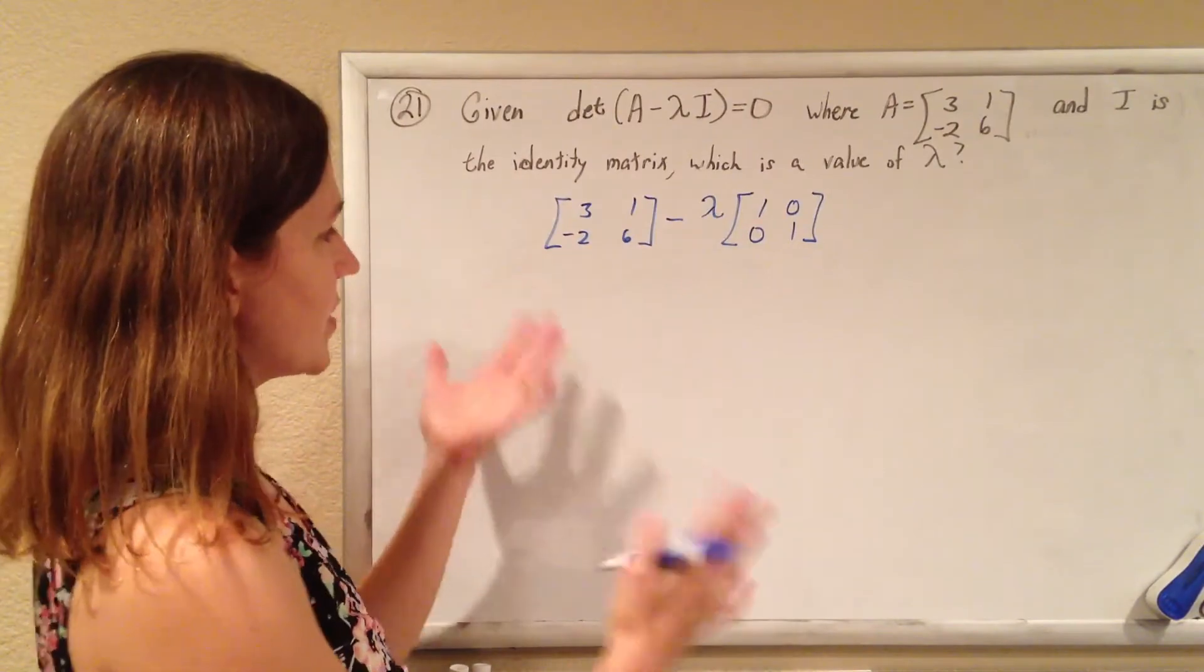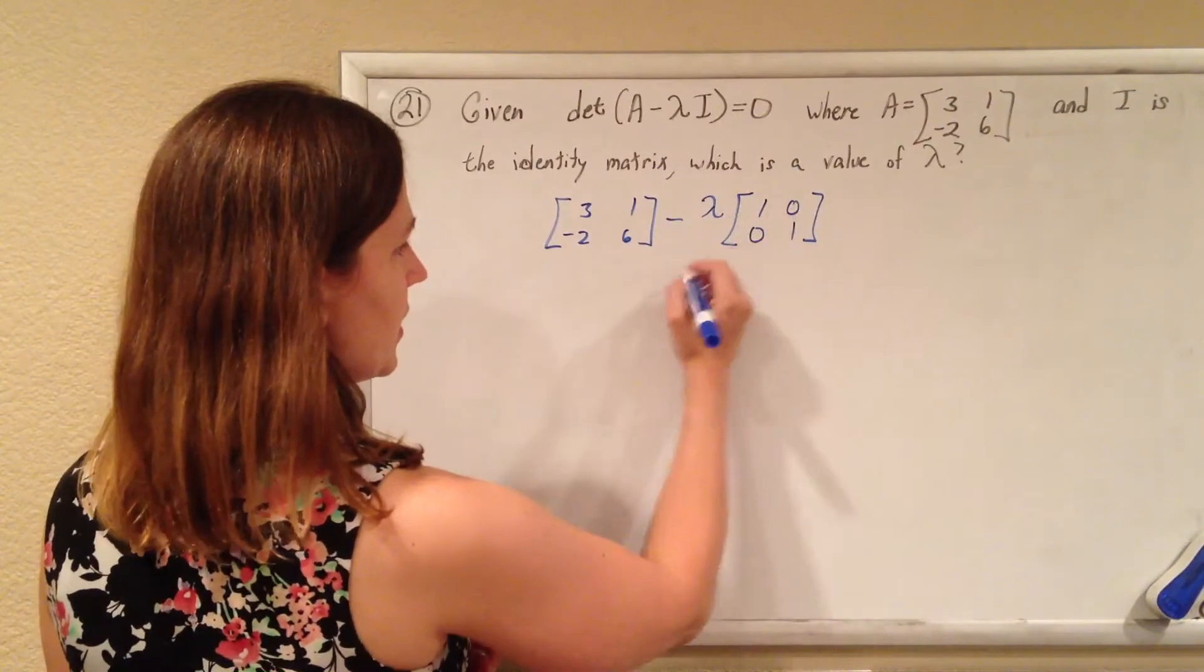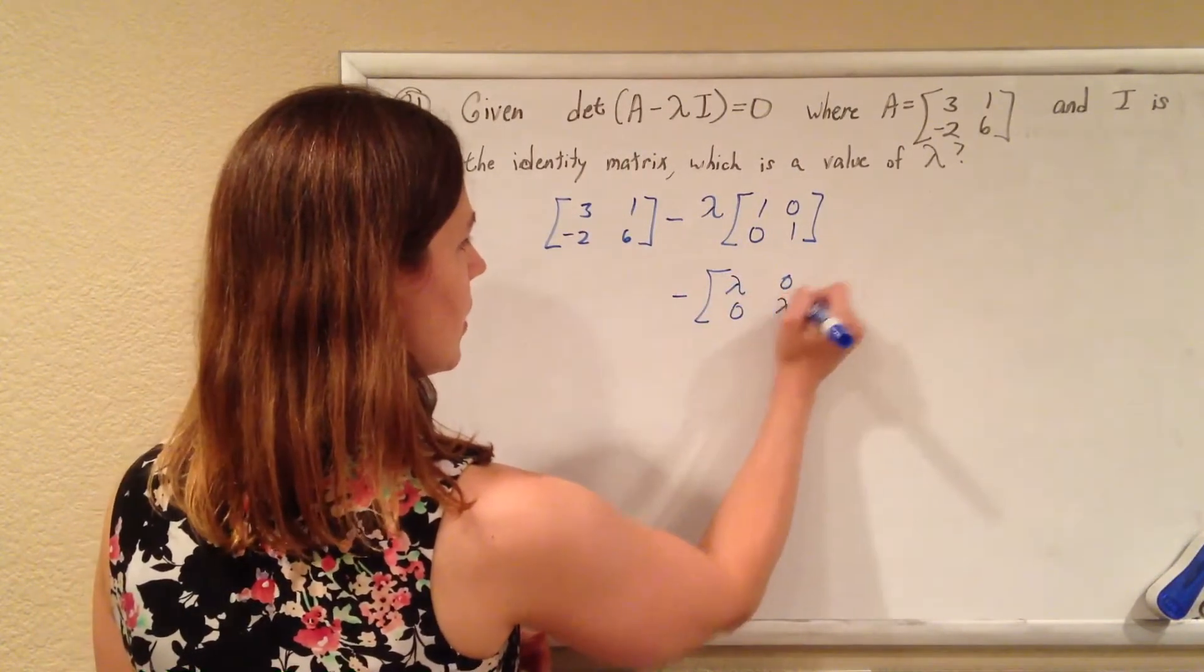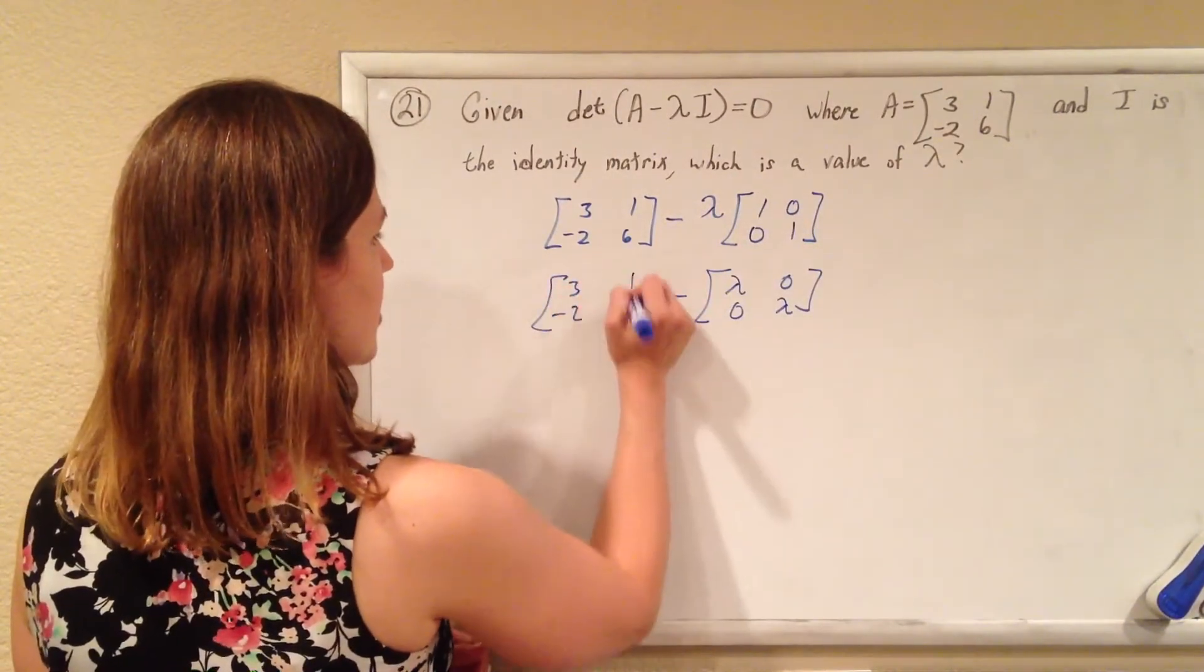And so let's just figure out what this is. This lambda we can distribute to each one of them, so it'll be minus lambda, zero, zero, lambda, just multiply each piece by lambda, and this piece here is just chilling.